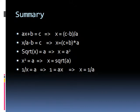So, to summarize on how to solve these linear equations: if you have ax plus b equals c, then you could write x equals c minus b over a. If you have x over a minus b equals c, you could rewrite this into x equals c plus b times a. If you have square root of x equals a, then you could rewrite this as x equals a squared. If you have x squared equals a, you could rewrite this into x equals square root of a. Lastly, if you have 1 over x equals a, you could rewrite this into x equals 1 over a. Now, a and b and c are numbers in these examples.